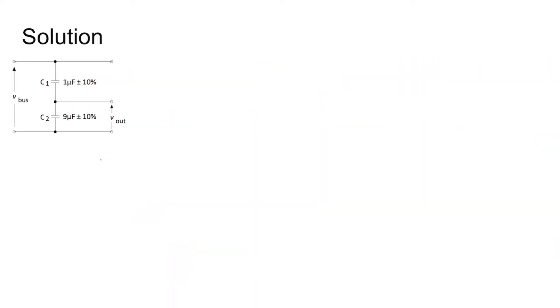The solution: this is the circuit given where C1 and C2 are the two capacitances. And we need to find V_out across C2.